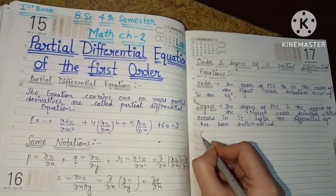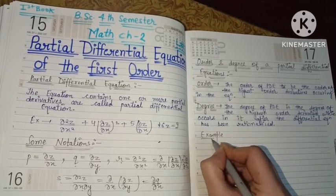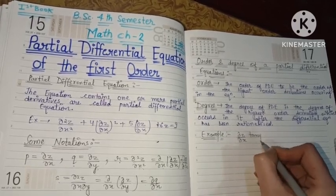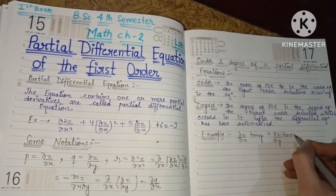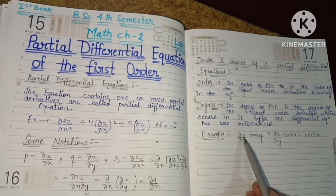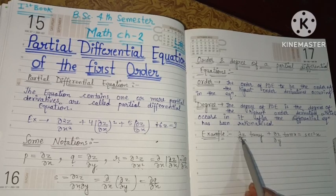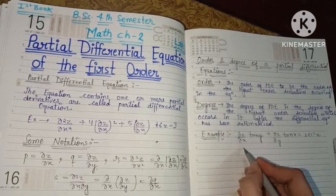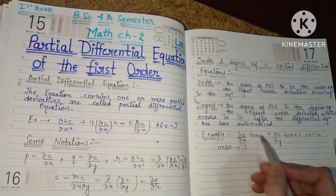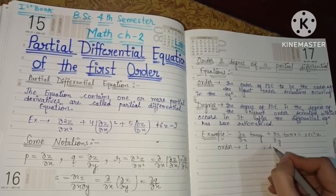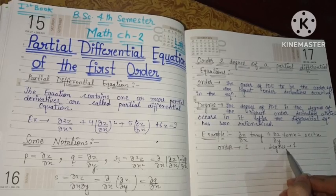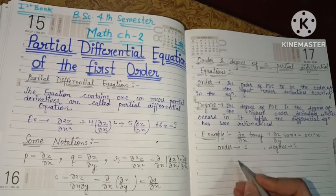Let me explain with examples. Take the equation: (del z/del x)tan y + (del z/del y)tan x = sec²x. Here, the highest derivative is 1 (neither del z/del x nor del z/del y has a power of 2). So the order is 1. Since the highest derivative has power 1, the degree is also 1.